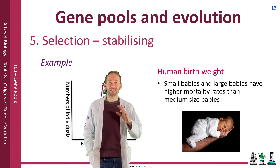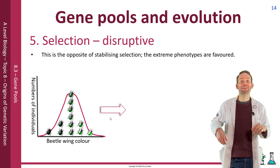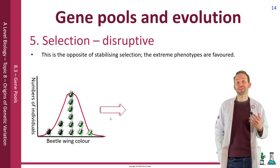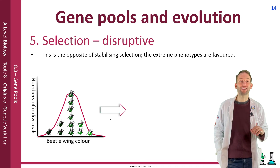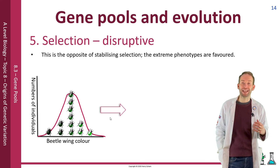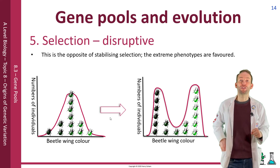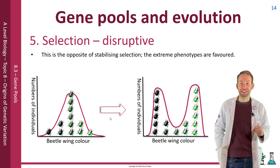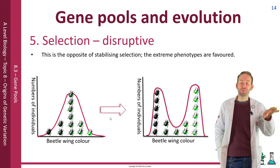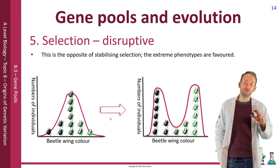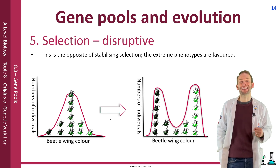Disruptive selection is the opposite — this is where the two extremes of the phenotypes are favoured. It's not a very common type of selection, but it brings about the most significant evolutionary change. We're more likely to split and get new species occurring, because we've now favoured the two extreme types, and the mean is not favoured at all and is selected against.